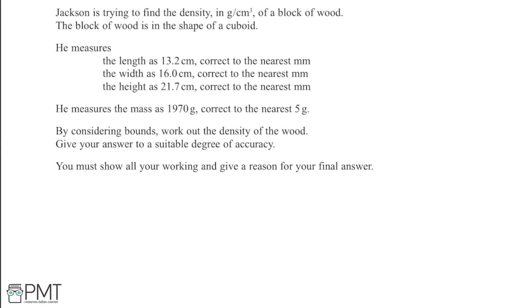In this question, Jackson is trying to find the density in grams per centimetre cubed of a block of wood. The block of wood is in the shape of a cuboid. He measures the length as 13.2 centimetres correct to the nearest millimetre, the width as 16 centimetres correct to the nearest millimetre, and then the height as 21.7 centimetres correct to the nearest millimetre.